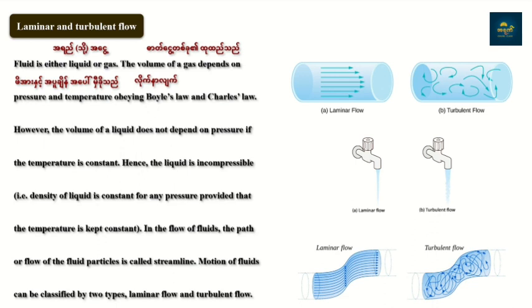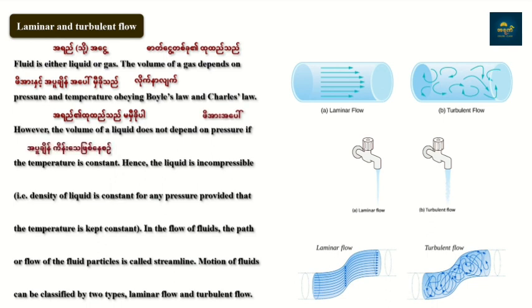The volume of gas depends on pressure and temperature. Pressure is constant if the temperature is constant. The liquid is incompressible — the liquid volume is constant.